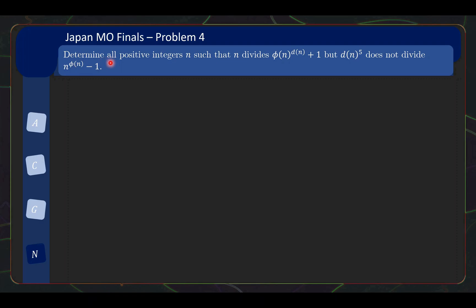Let us take a look at what the problem says, which is to determine all positive integers n such that n divides φ(n)^d(n) + 1, but d(n)^5 does not divide n^φ(n) - 1. Right off the bat, we see some complicated looking expressions around, but not to worry because every time you see something like this, the first thing you should do is write down the expressions for φ(n) and d(n).